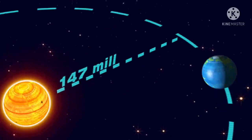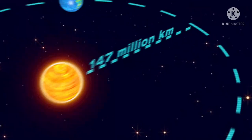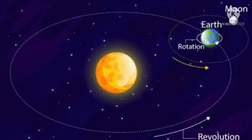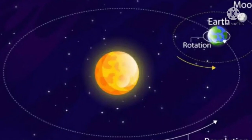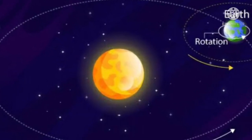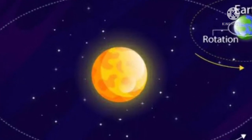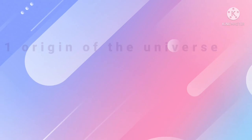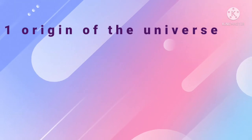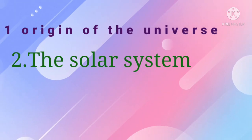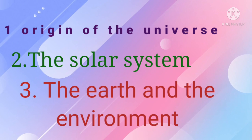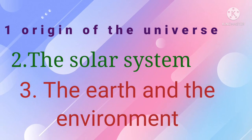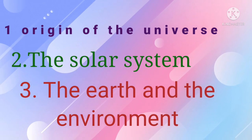Children, in the previous class you have learned the concepts about the earth and the solar system. In this chapter we are going to learn about the origin of the universe, the solar system and earth, and earth's environment in detail.